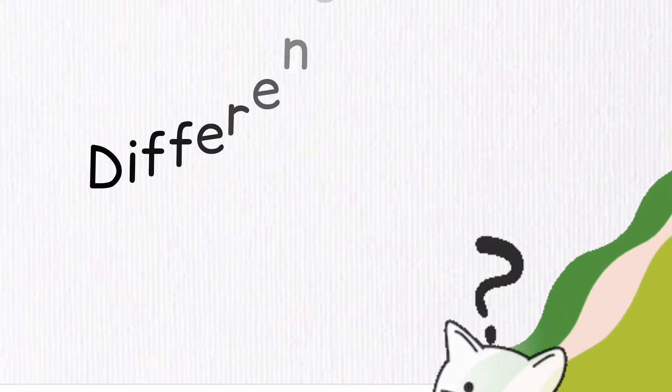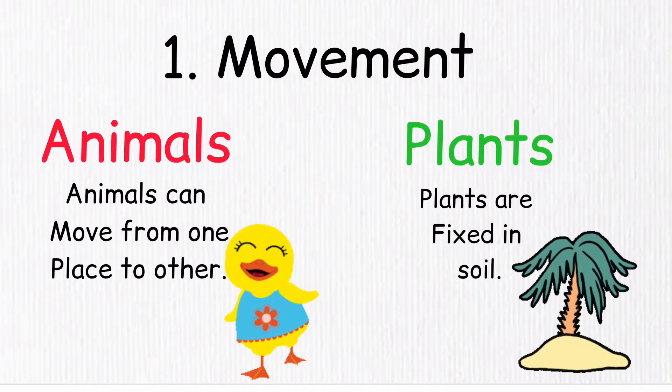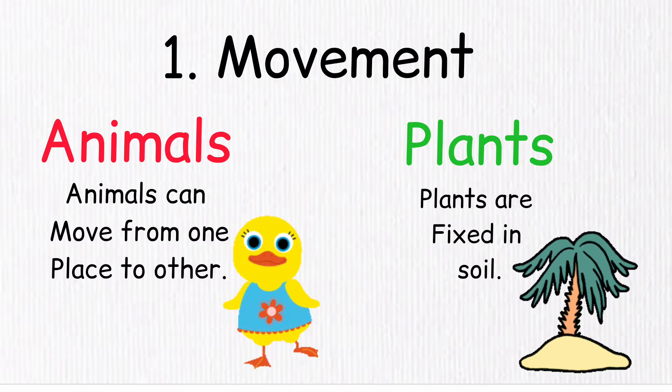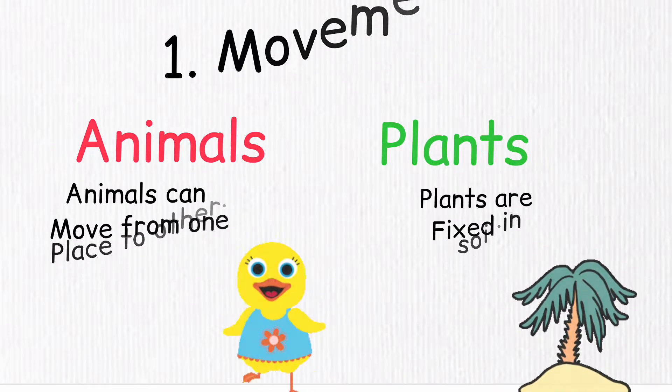The first difference is about movement. Animals can move from one place to other, while plants are pretty stationary and they can't move.